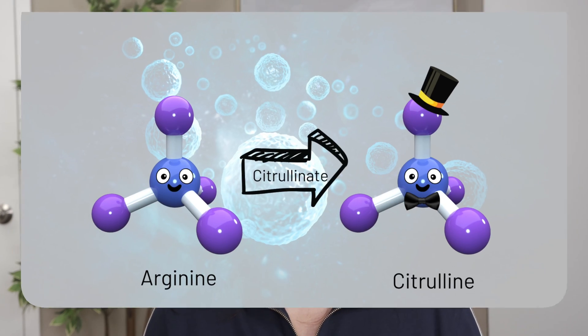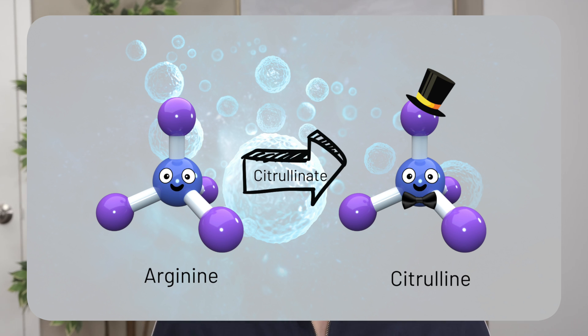To citrullinate is, in biologic terms, to take the amino acid arginine and turn it into citrulline. Remember, amino acids are simply the building blocks for proteins. Our DNA encodes for different amino acids that then come together to form all the proteins or peptides of our body. Citrulline is a necessary amino acid, but one that our DNA doesn't code for. So in order to get citrulline to build certain proteins, our body has a handful of ways to make it — one of those ways is to take arginine and citrullinate it. So what is a citrullinated peptide? Simply a peptide or protein that's got one of these citrulline amino acids in it.